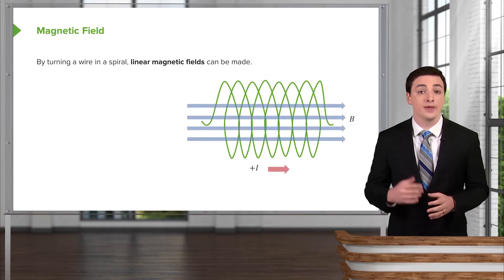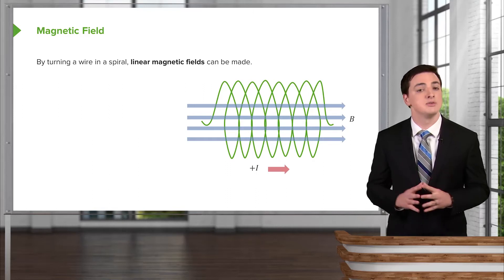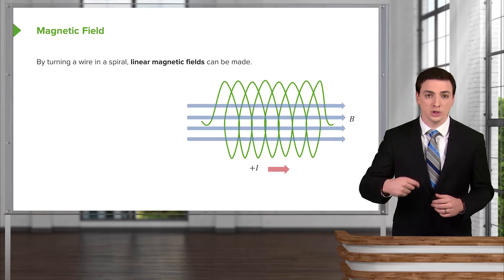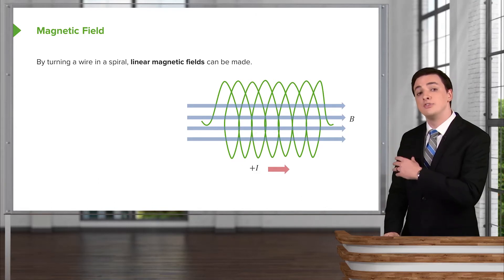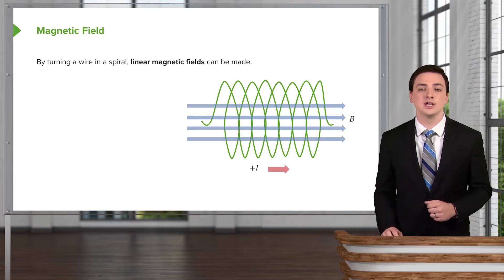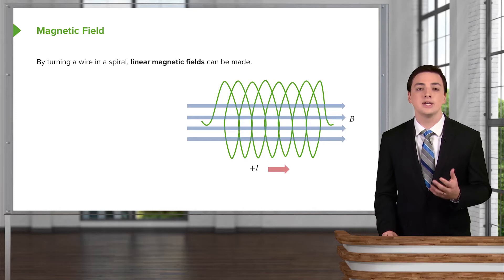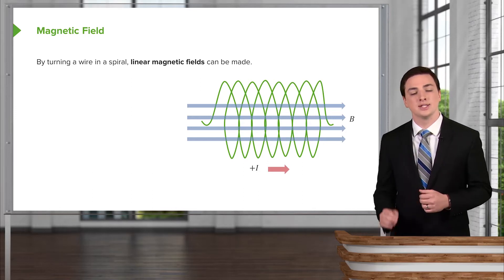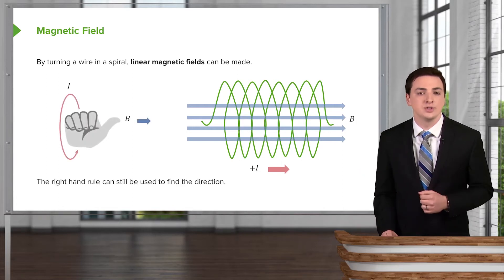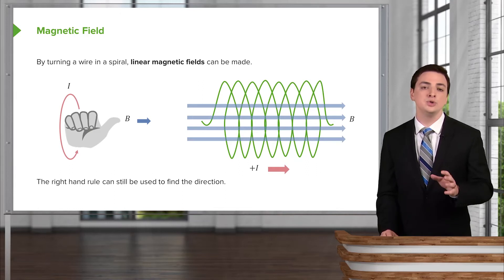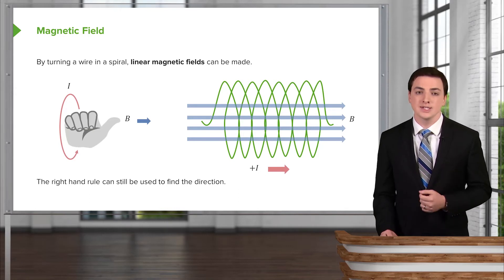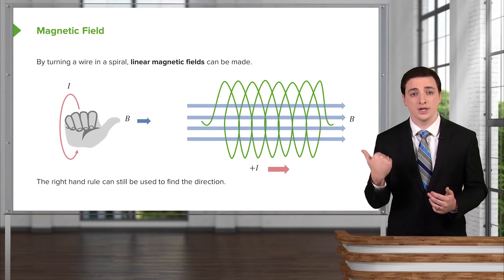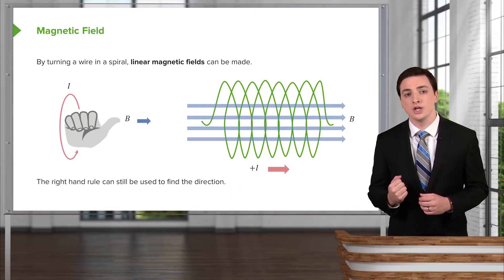Sometimes we might not want our magnetic field to be going in a circle — we might just want a straight line of a magnetic field. We can be very clever and wrap a wire into a loop over and over again. Using your right-hand rule enough times, you could put your thumb in the direction of the current as shown by this looping wire and convince yourself that you will get a linear magnetic field going in the same direction as the current is flowing through this particular wire. You can find the direction of this magnetic field again using the right-hand rule, but in a slightly different way. This looped coil is called a solenoid, and what you do in this case is curl your fingers in the direction of the curling wire, and then your thumb will give you the direction of the magnetic field.